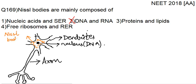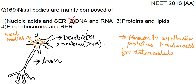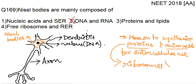Nissl bodies or missile granules — what is the function of these missile granules? They are present around the cell membrane and are known to synthesize proteins and amino acids for intercellular use. So what is necessary to produce proteins? Ribosomes. Ribosomes are present on the surface of the rough endoplasmic reticulum.